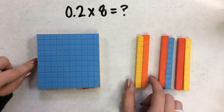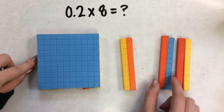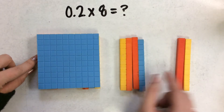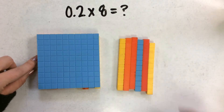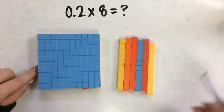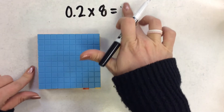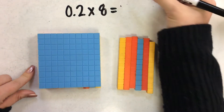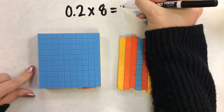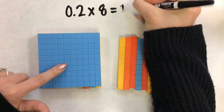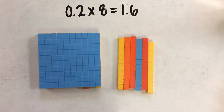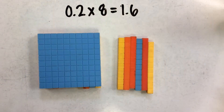And now I have two, four, six tenths left over. So two tenths times eight equals one whole and six tenths left over.